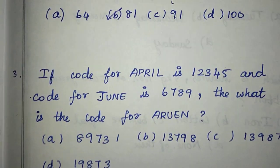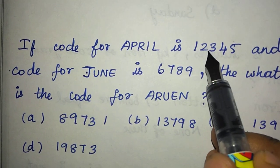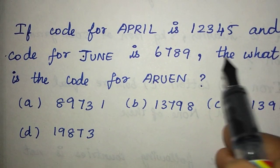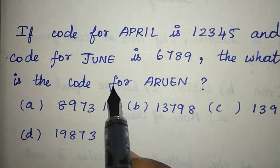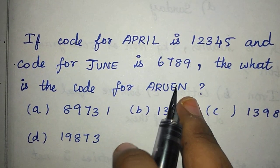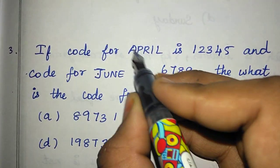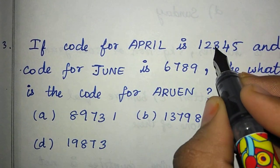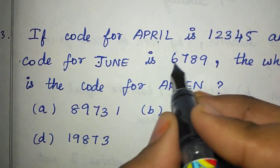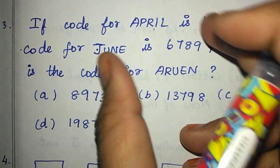The code for J-U-N-E is 6-7-8-9. What is the code for A-P-R-I-L? April and June — for April: A is the first letter so A is 1, P is 2, R is 3, I is 4, L is 5. And J is 6, U is 7, N is 8, E is 9.